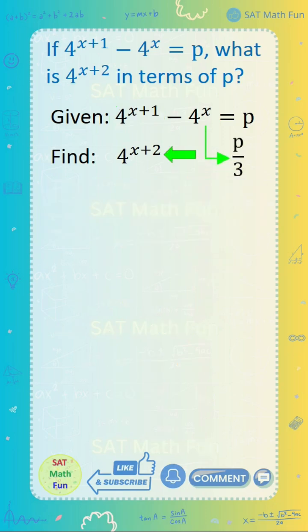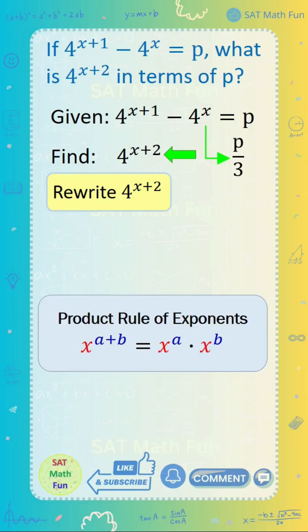Now we need to find 4 to the power of x plus 2. Let's rewrite this term. Again, we use the product rule of exponent that we used earlier. So we have 4 to the power of x plus 2 equals 4 to the power of x times 4 squared. 4 squared is just 16.